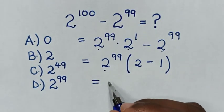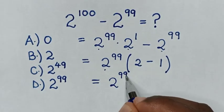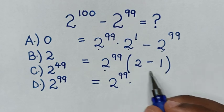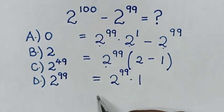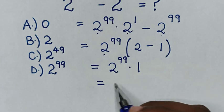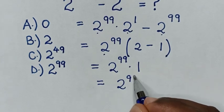This equals 2^99 times (2 minus 1) which is 1. Then it will be equal to 2^99 times 1, which is 2^99.